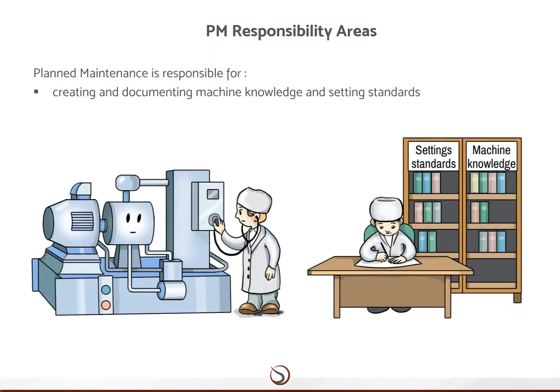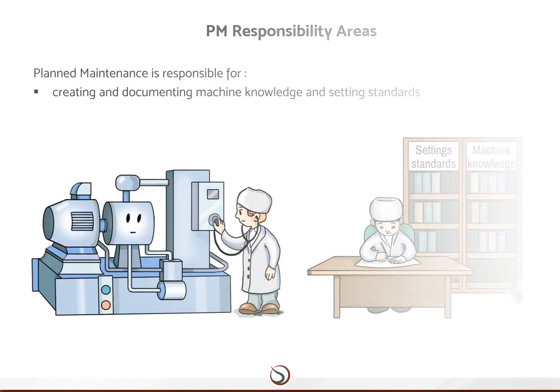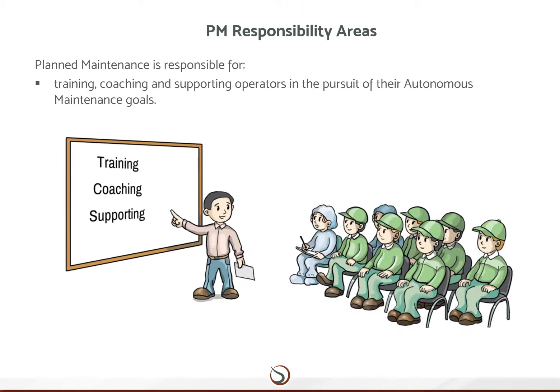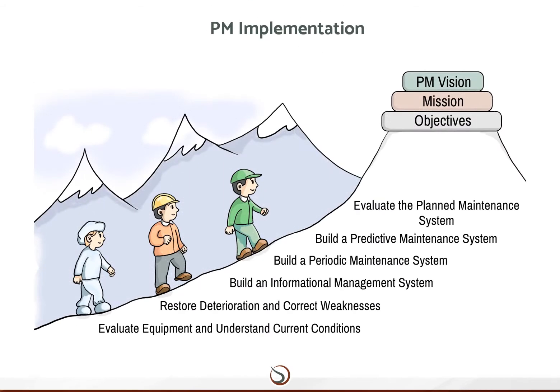Its objective is to systematically ensure effective asset care over the plant equipment and machines. Moreover, Planned Maintenance is responsible for creating and documenting machine knowledge and setting standards, as well as for training, coaching, and supporting operators in the pursuit of their autonomous maintenance goals. The PM vision, mission, and objective can only be achieved through the creation and building of knowledge and skills amongst both maintainers and operators, and the selection and application of the appropriate maintenance type to equipment.